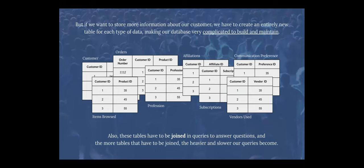What happens if you start to want to track lots of different types of information about your customers? What's their profession, how do they prefer to be communicated with, what do they subscribe to, what have they browsed? The more information you want to track about a customer and connect together, the more tables you have to create. It's cumbersome to build and maintain all those tables. When you want to extract information and make use of it, you have to join those tables, and as you get large amounts of joins occurring, that becomes a poor-performing way to query that data.